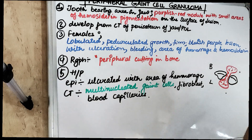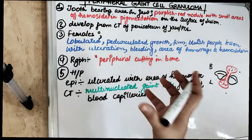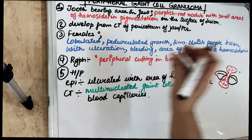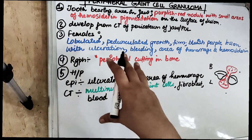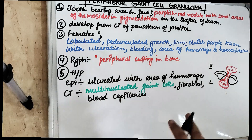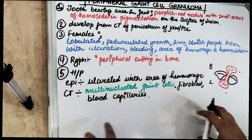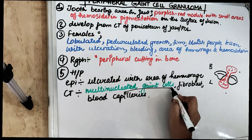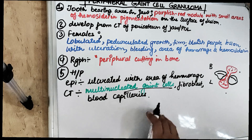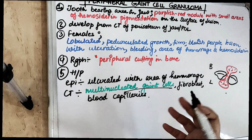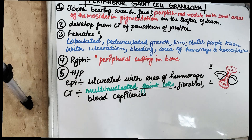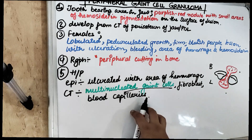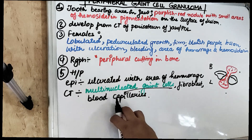It is present at the tooth-bearing area, with red nodules present and small areas of pigmentation on the surface of the lesion. To summarize, histologically in the connective tissue we find giant cells, and clinically we see reddish-purple or bluish-purple lesions with some areas of ulceration, hemorrhage, and bleeding.